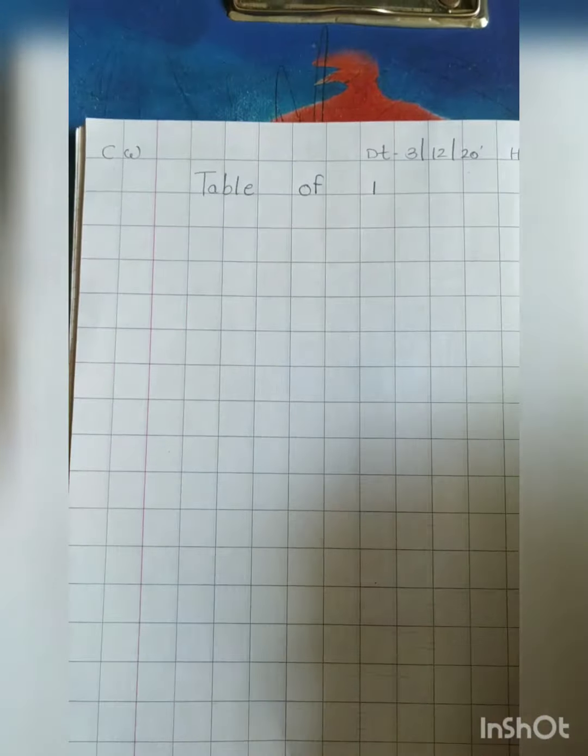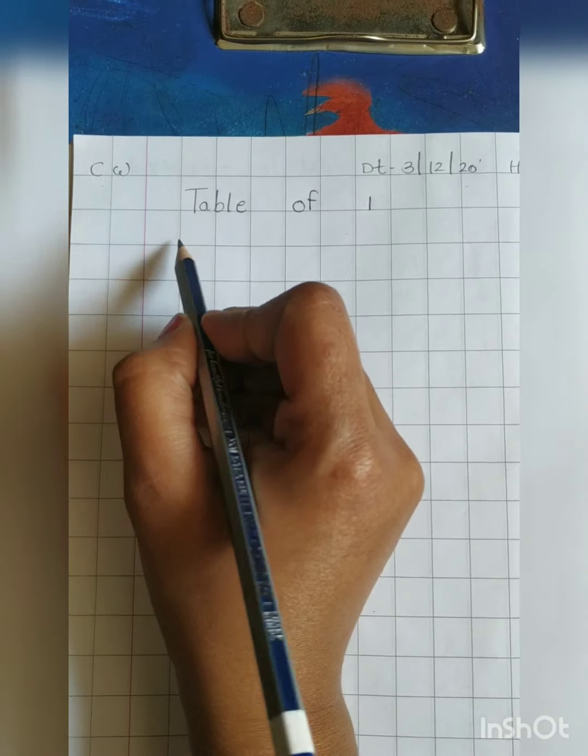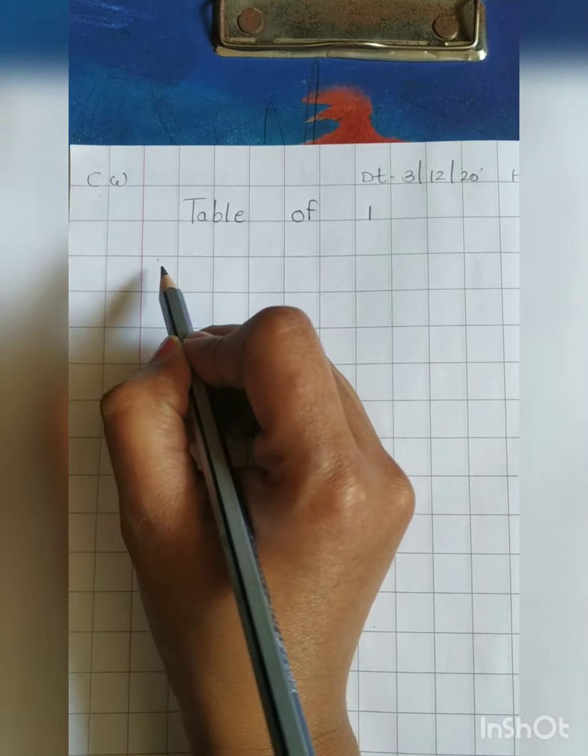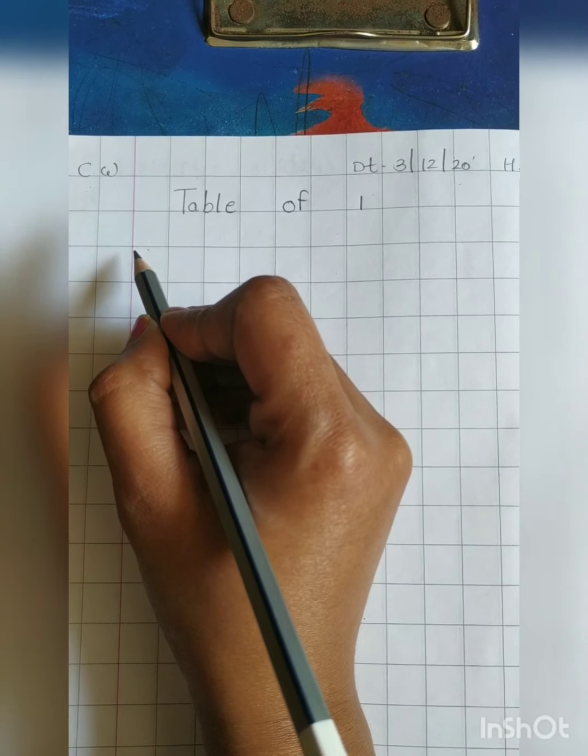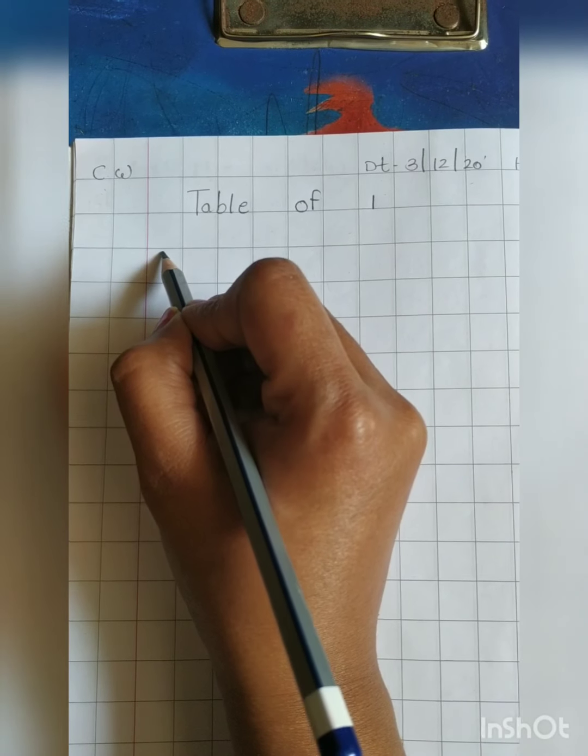Table of 1. Now, let's start it from near the margin. The red line is called the margin line.